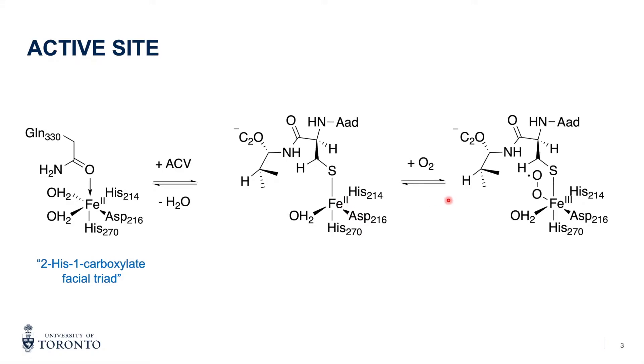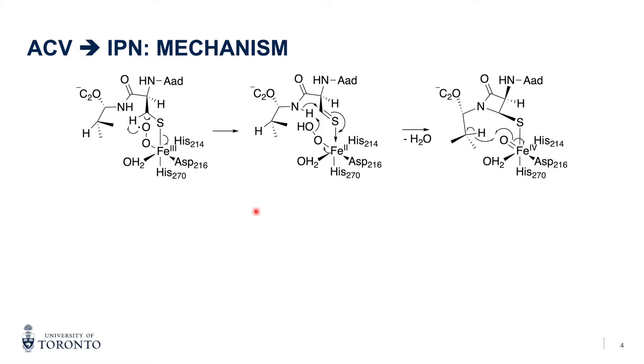The valine part of the ACV will displace one of the water molecules, and when dioxygen binds, the iron is oxidized to iron 3+, forming a radical. Let's go through the mechanism.